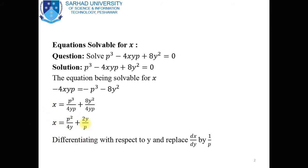This is actually the solution expressed as an algebraic equation. In this algebraic equation, we have three variables: X, Y, and P. But P is actually dy/dx. If we consider this as an algebraic equation, then the equation is solved for X. But in case of a differential equation, P is still present. X is equal to P squared divided by 4Y plus 2Y divided by P. This is the value of X because we want to solve the equation for X — the equation is solvable for X.